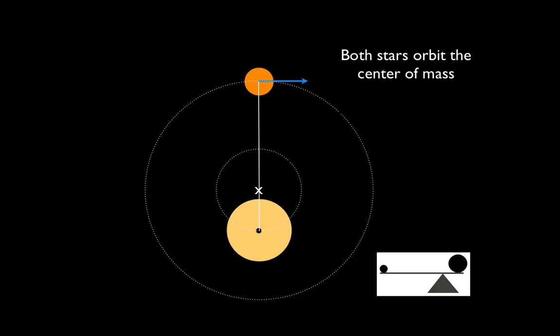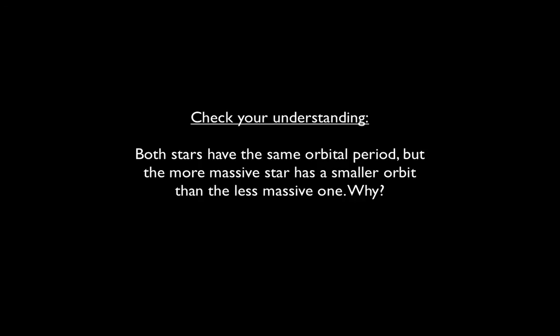Notice that at any point in time, the two stars are always on the opposite sides in their orbits from the center of mass. Otherwise, of course, that point would no longer be the center of mass.